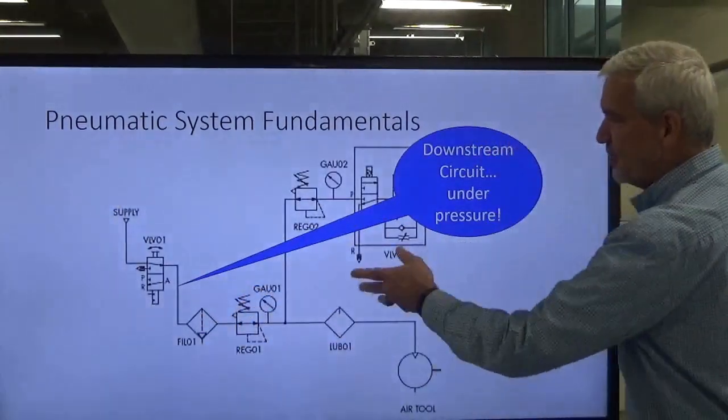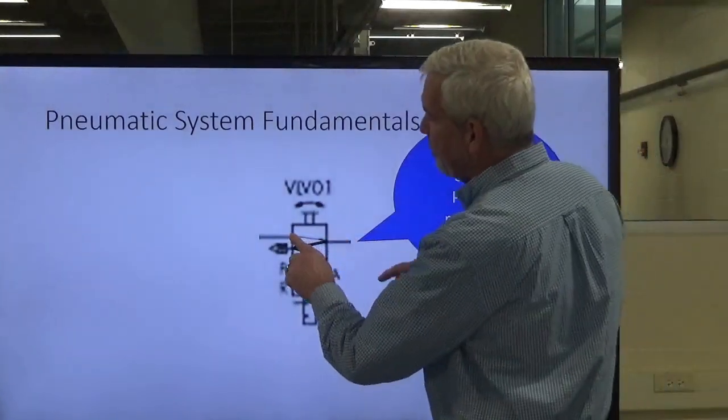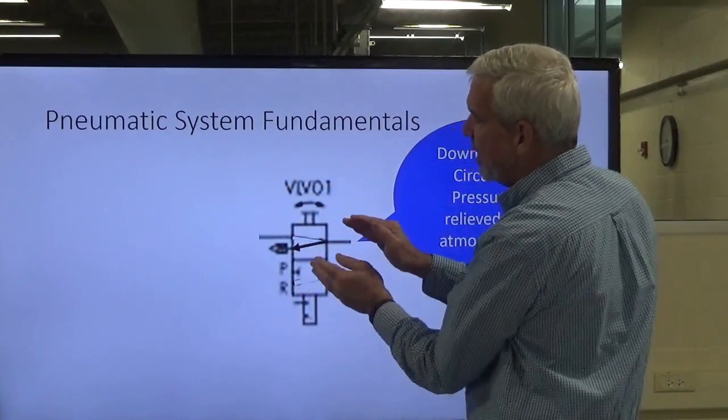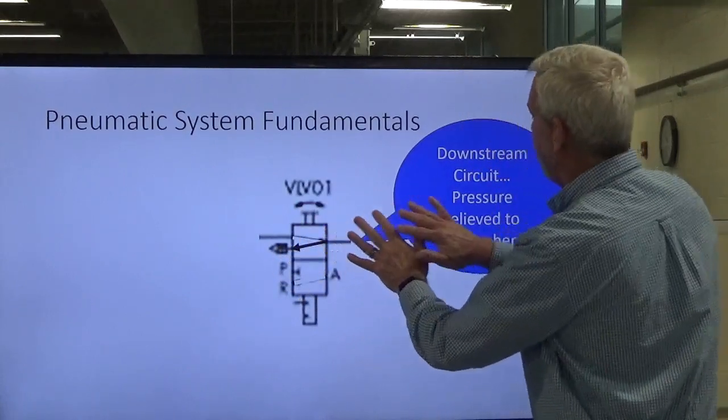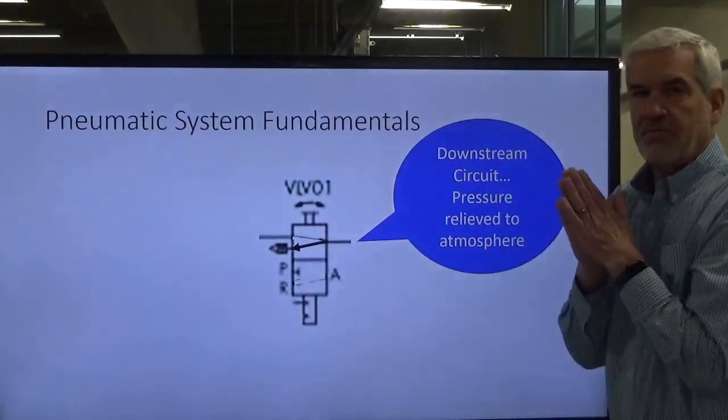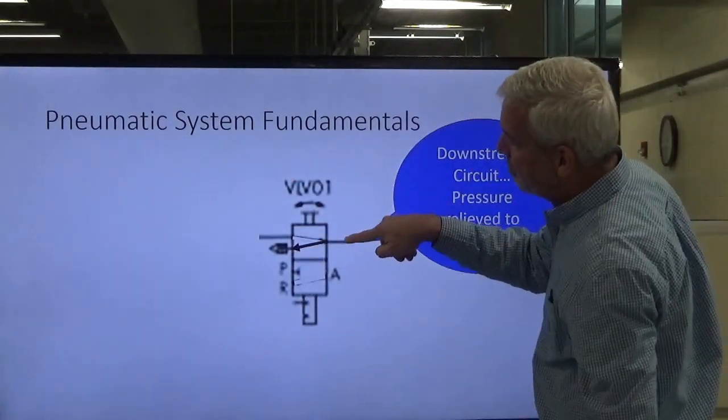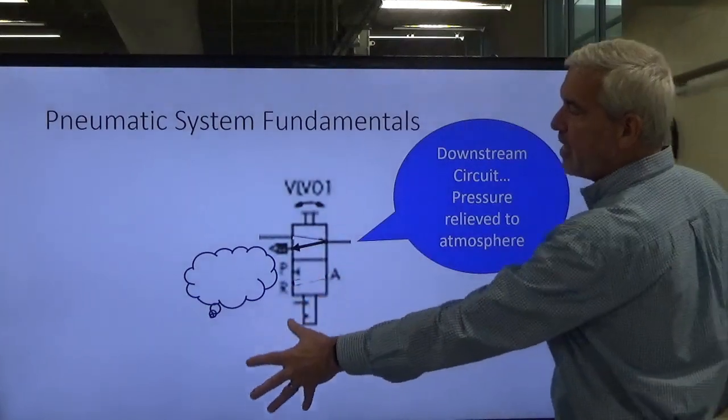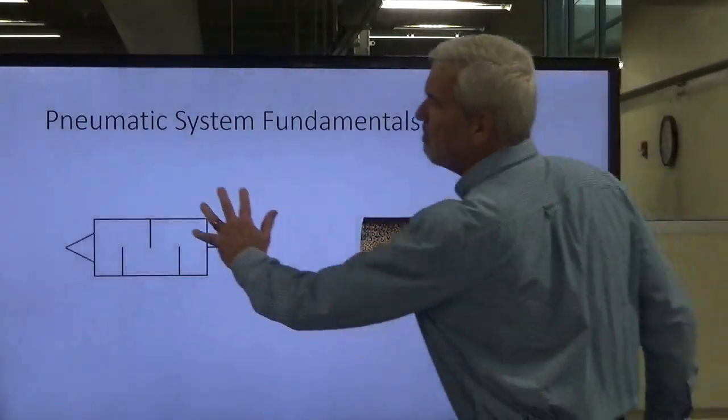When we shut off that valve, incoming air supply has no path because we've moved the spool. But we still have pressure in our downstream circuit. So when we shut off that valve, it creates a port for all the downstream pressure to come back out and exhaust into the atmosphere through a muffler.